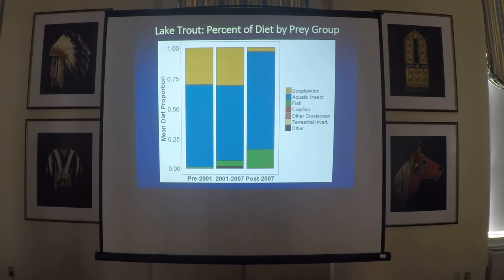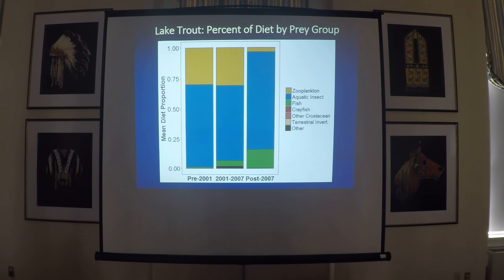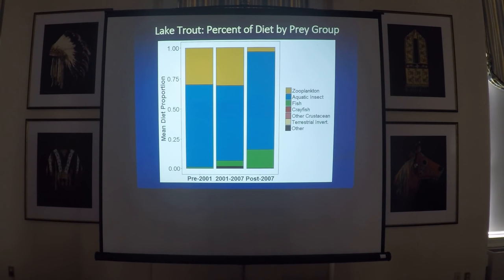Pre-removal, so pre-2001, adult lake trout diets were dominated by aquatic insects, which were primarily Hexagenia and chironomid pupae, and then about 30% of the diets were made up of zooplankton. Fish represented just 1% by number of the prey consumed by adult lake trout prior to bass removal. Post-bass removal, the proportion of fish increased to 5% and then to 16%, and post-2007 we also saw a large drop in the proportion of zooplankton in the diets.